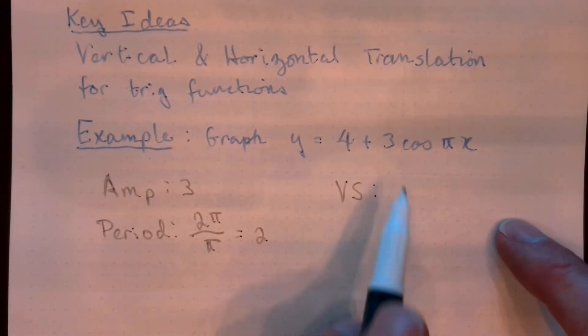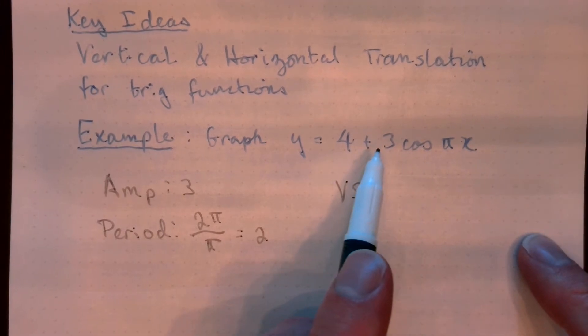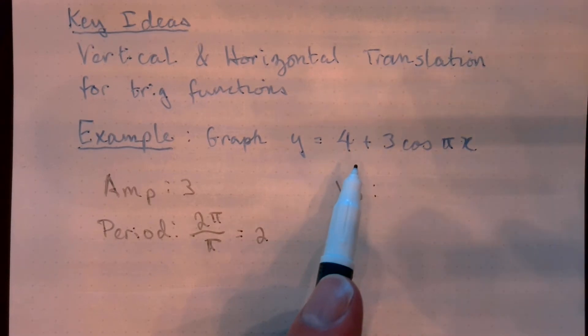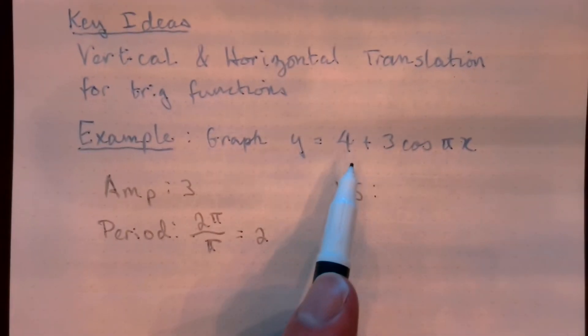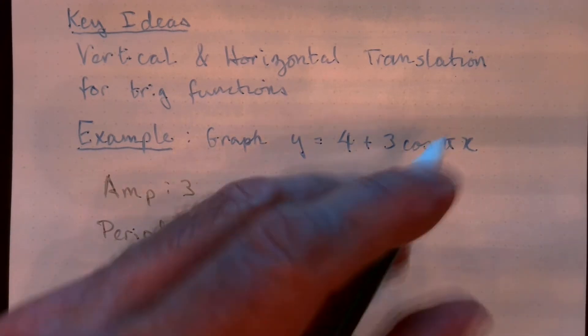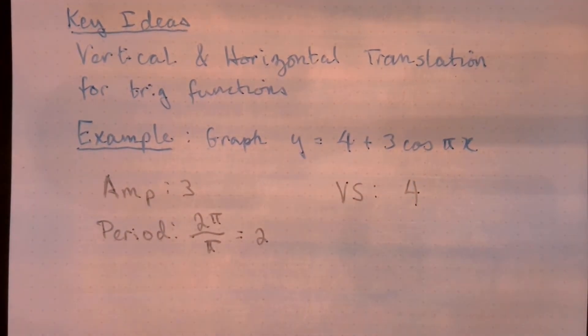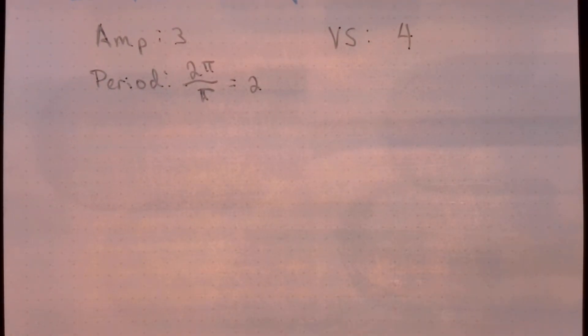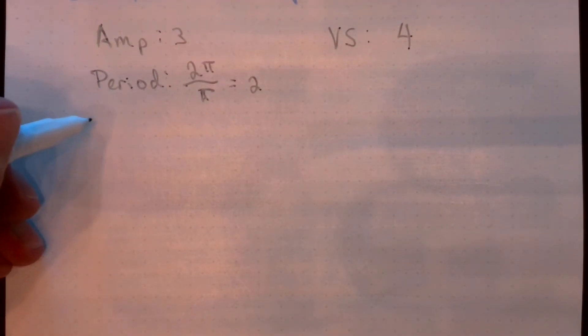Now as we discussed in our last video, adding on the outside of the function is going to move you in the vertical direction. It will move you up and down. So this is going to be a vertical shift of 4 units. Let's get all that together and graph this function.